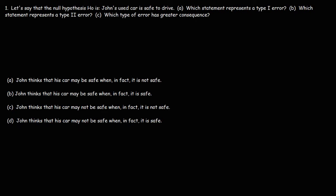What I'd like to do is distinguish the good decisions from the bad ones. Answer choice A: John thinks his car may be safe when in fact it is not safe. Answer choice C: John thinks his car may not be safe when in fact it is safe — if the car is safe and he decides to drive it, that's a good decision. Answer choice D: John thinks his car may not be safe when in fact it is safe. That's a bad decision — if the car is good to drive and he doesn't drive it, that's an error.